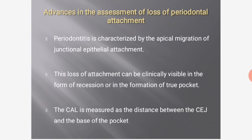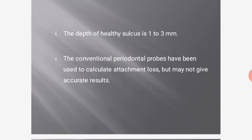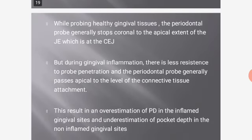Periodontitis is characterized by apical migration of the junctional epithelial attachment. This loss of attachment can be clinically visible as recession or formation of true pockets. Clinical attachment loss is measured as the distance between the cementoenamel junction and the base of the pocket. In healthy sulcus (1–3 mm depth), the probe stops coronal to the apical of the junctional epithelium, but during gingival inflammation, reduced resistance causes the probe to pass apical to the connective tissue attachment, resulting in overestimation at inflamed sites and underestimation at non-inflamed sites.